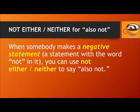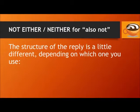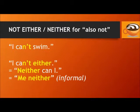When somebody makes a negative statement — a statement with the word 'not' in it — you can use 'not either' or 'neither' to say 'also not.' The structure of the reply is a little different depending on which one you use. If someone says 'I can't swim,' you can say 'I can't either,' or 'neither can I.' Or informally, 'me neither.'